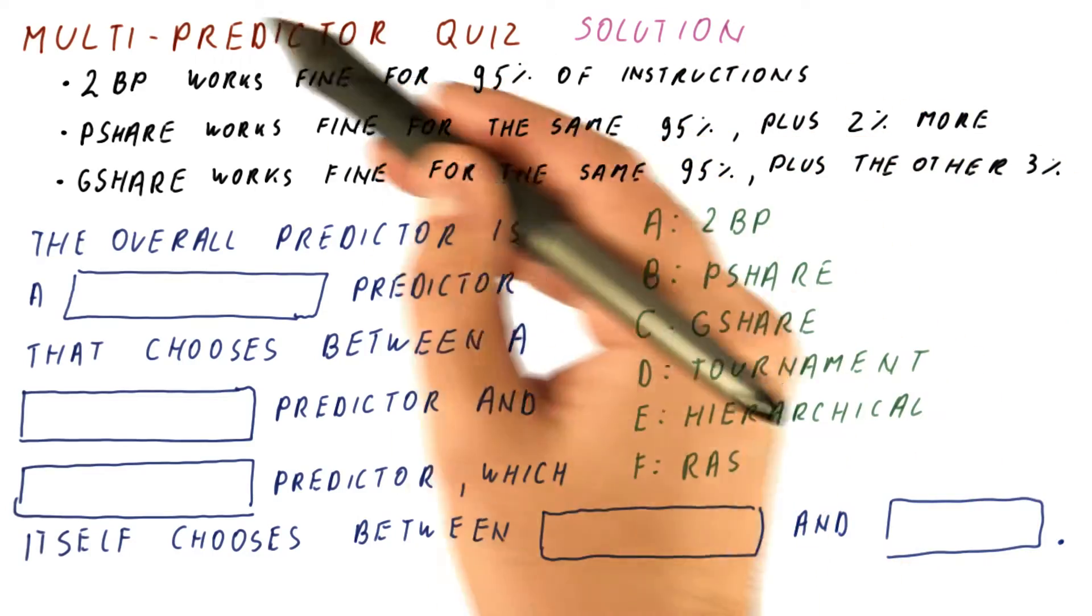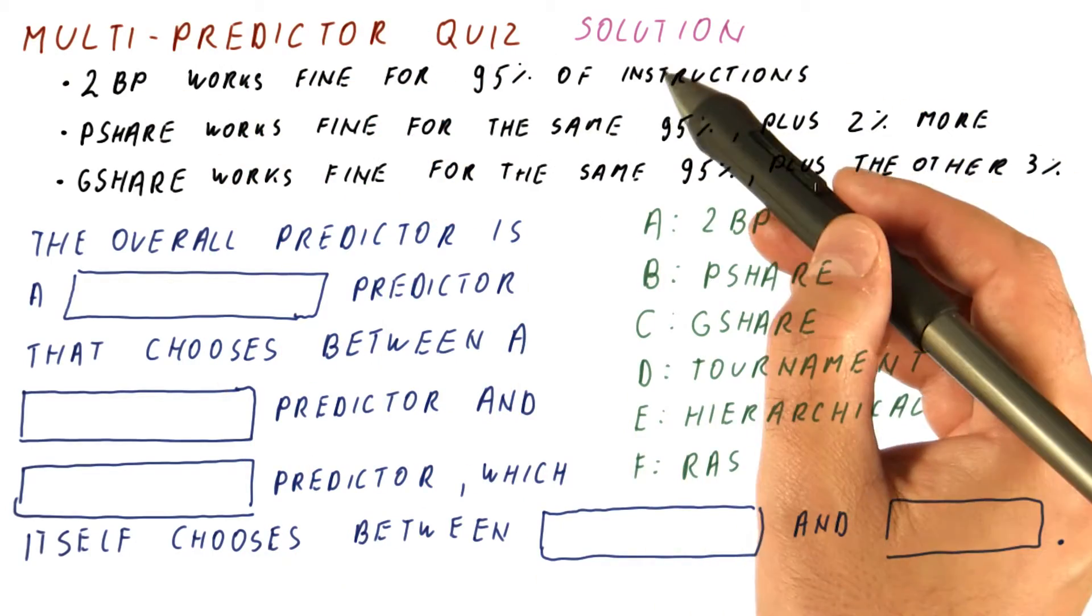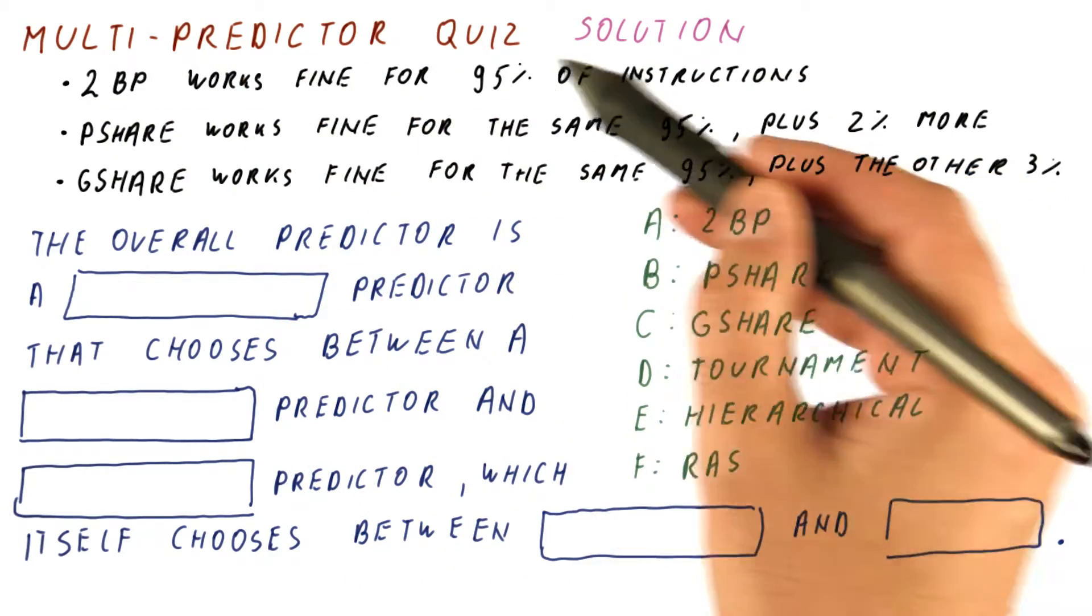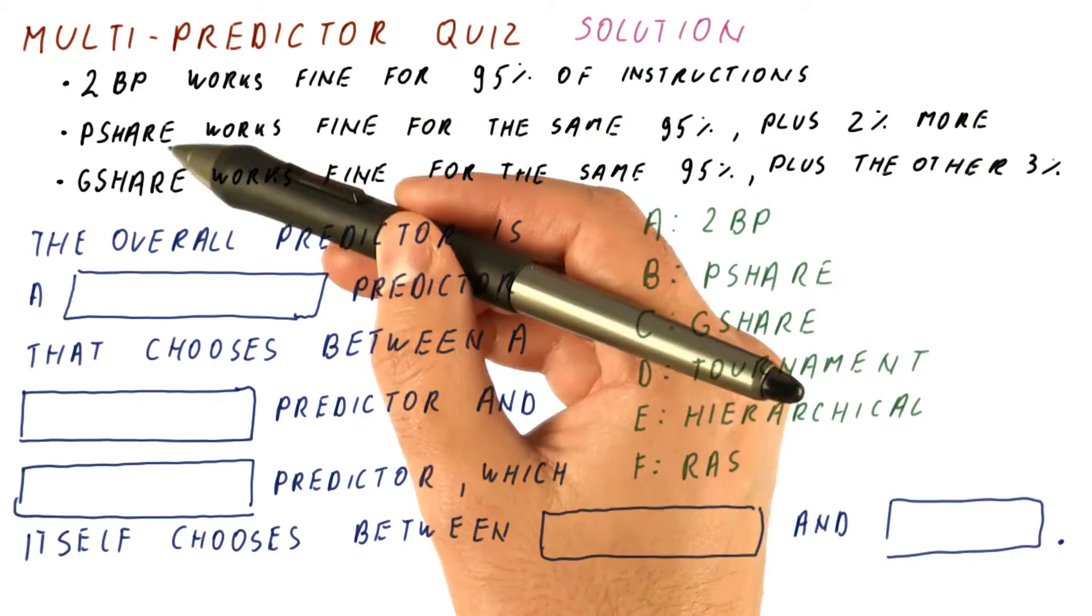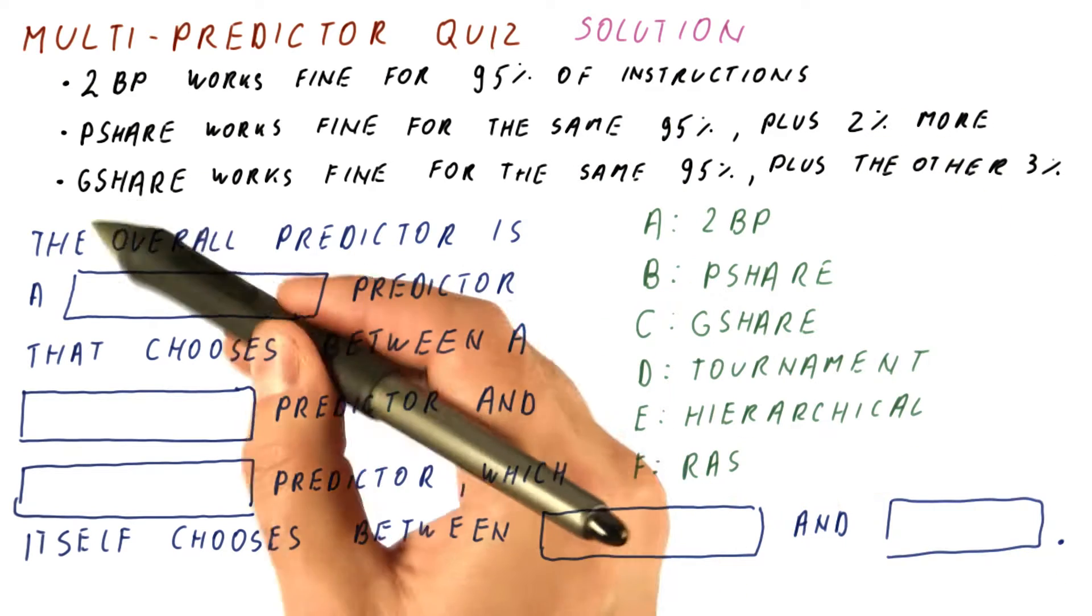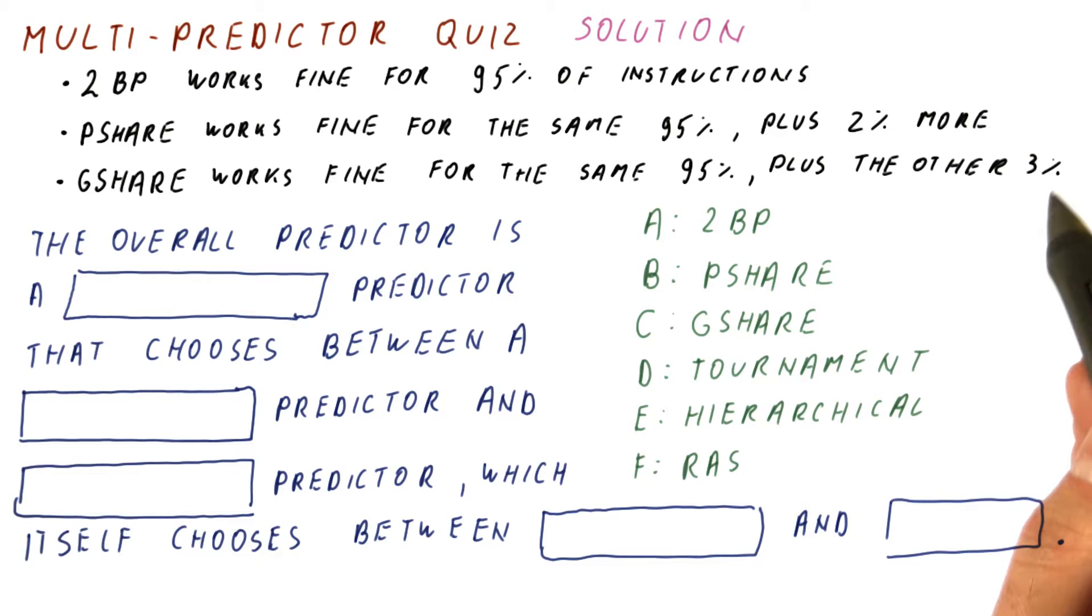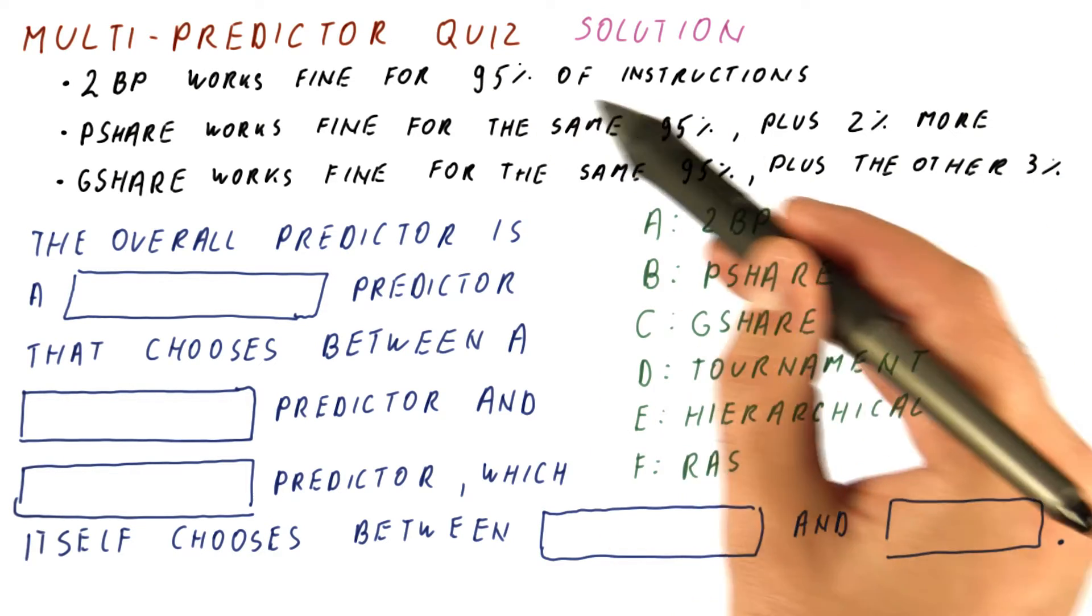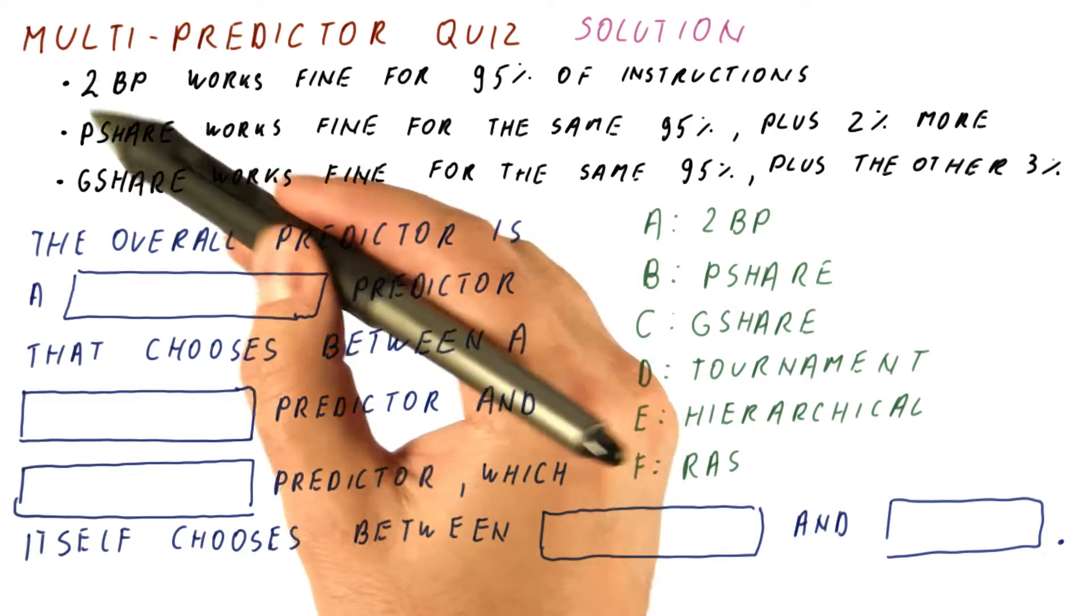Let's look at the solution to our multi-predictor quiz, where we have a program for which the two-bit predictor works for many instructions. P-share covers some additional instructions, and G-share covers the rest that P-share doesn't cover. But all of them can correctly predict the same branches that the two-bit predictor can.